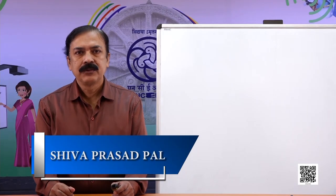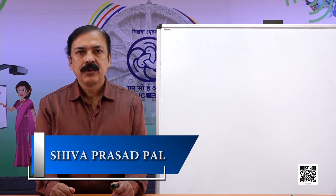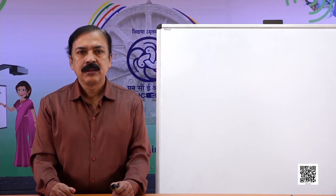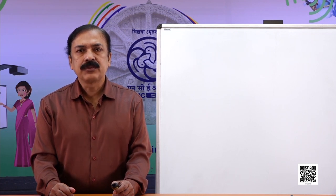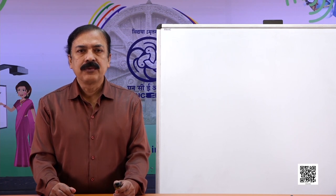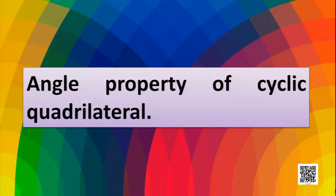Dear students, welcome to this program. Today we are going to discuss Circle Part 8, which is Chapter 10 from the Class 9 mathematics book. What we are going to discuss today is the angle property of the cyclic quadrilateral.